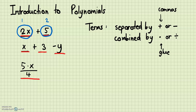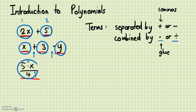If you look at the bottom one, we have one term, then addition that separates the terms, then another term, then subtraction that separates the terms, and then the third term. If you look at the last one, there's multiplication and division, which means they're all combined together — so this is just one big term.